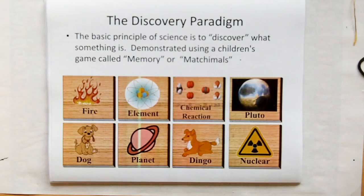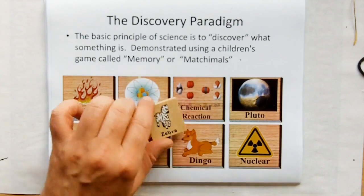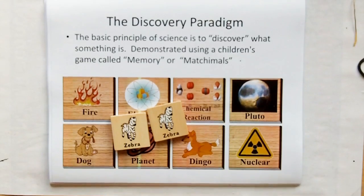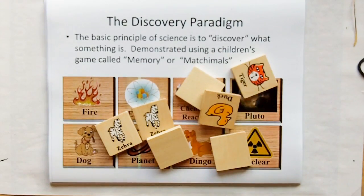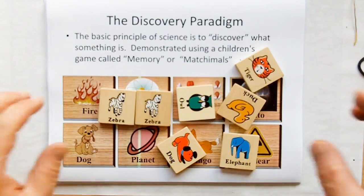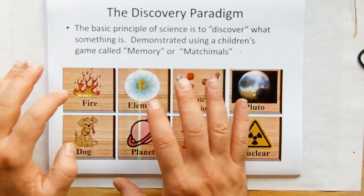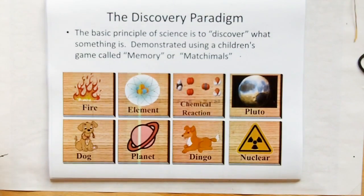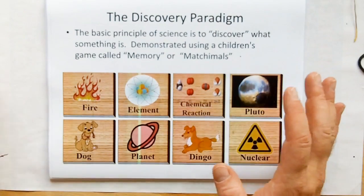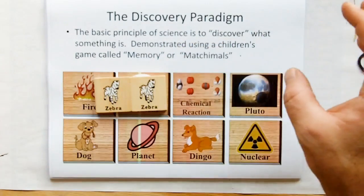The basic principle of science is to discover what something is. We're going to be using these matchimals — it's a child's toy; when I was a kid it was called memory, the more modern version is matchimals. When you get two pieces that are alike, like two zebras, we can represent that as a scientific discovery. A long time ago we thought fire was an element, but today we know fire to be a chemical reaction — that would be a scientific discovery.